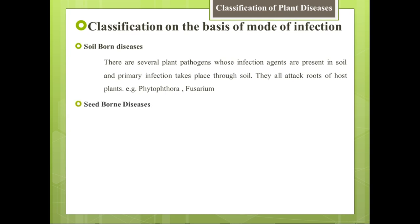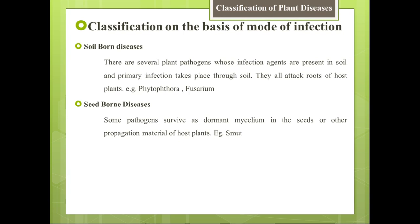Next is seed-borne diseases. Some pathogens survive as dormant mycelium in the seeds or other propagation material of host plants. Kuch pathogens aise hain jo host plant ke seed ke andar ya host plant ke other propagation material ke andar dormant mycelium ki surat mein survive karte hain — unko kehte hain seed-borne diseases. Iski example hai smut disease of wheat.